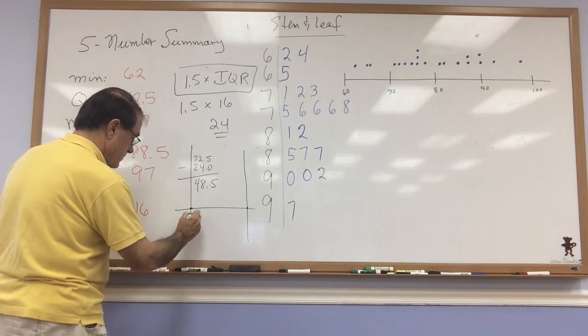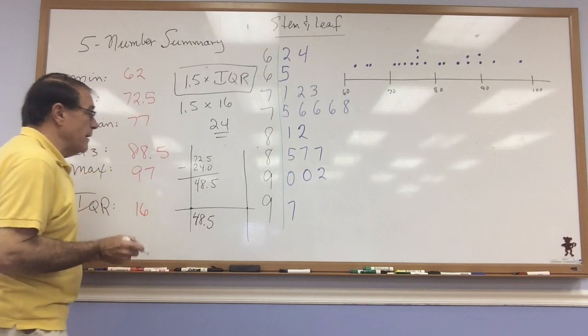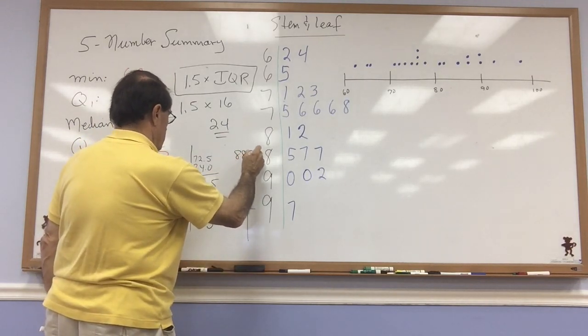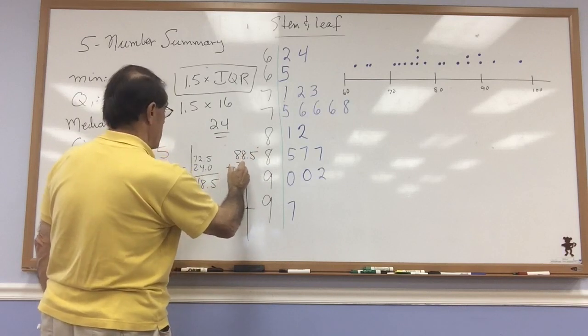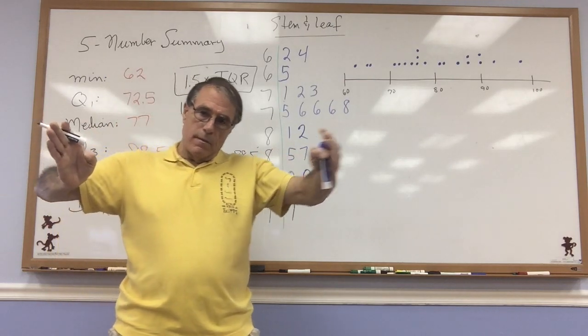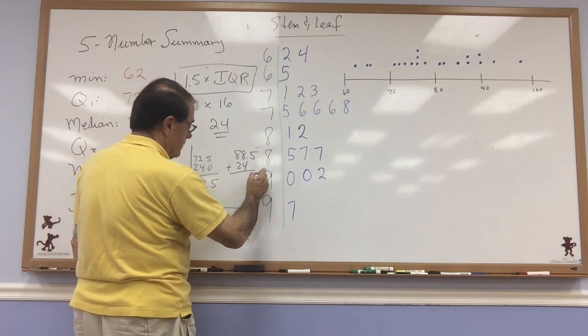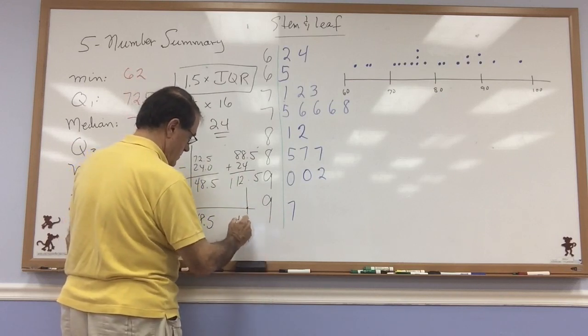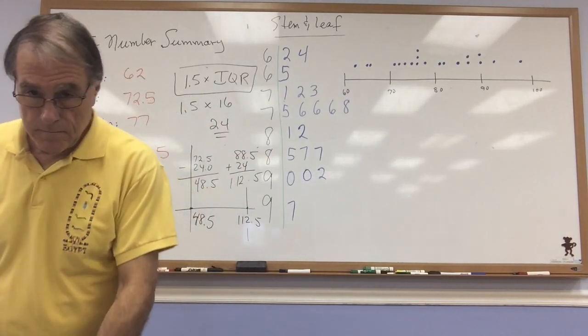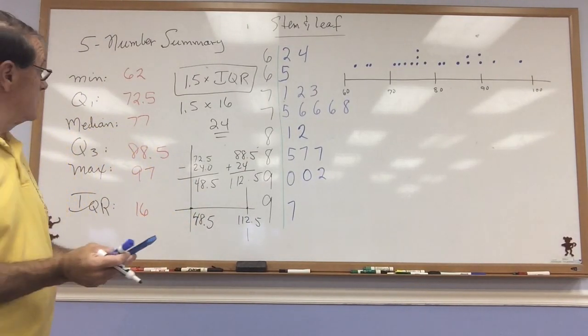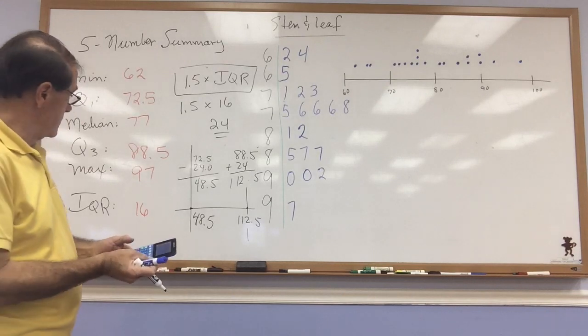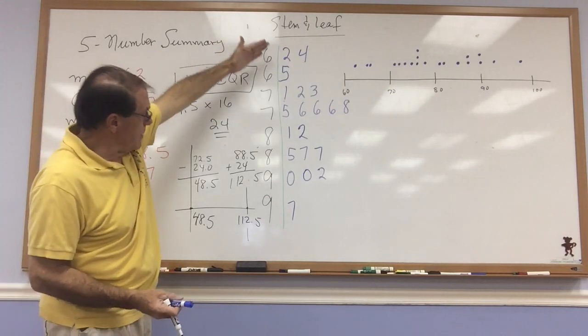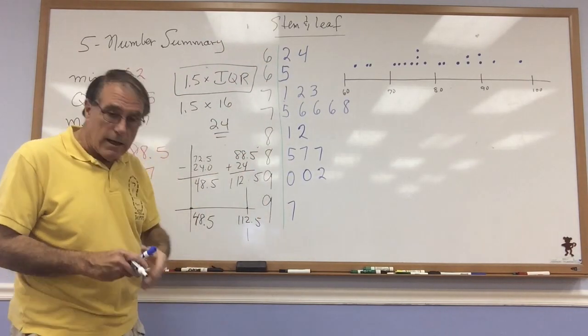So that's this lower end. And to get this upper end, I'll take 88.5. And I'm going to add 24. Because again, we're lowering the bottom and extending the upper. And when I add 24, I get 112.5. 88.5, add 24, 112.5. 72.5 subtract 24, get 48.5. Now since none of my scores fall outside of this range, there are no outliers in this data.